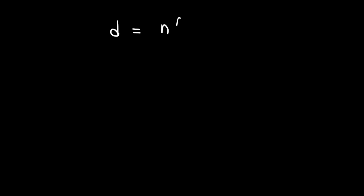In this video we're going to talk about how to determine the number of diagonals in a polygon. Here's the formula: d is equal to n times n minus 3, divided by 2, where n represents the number of sides in the polygon.